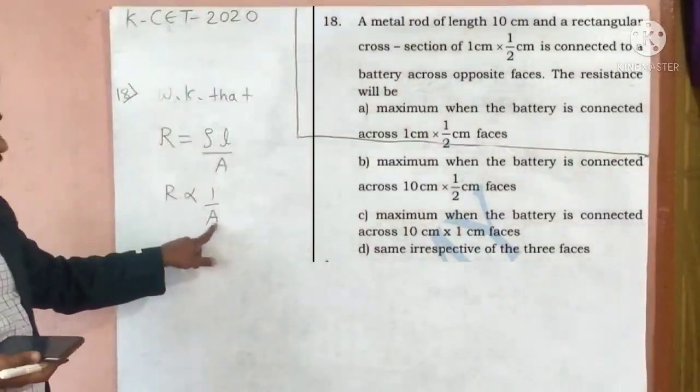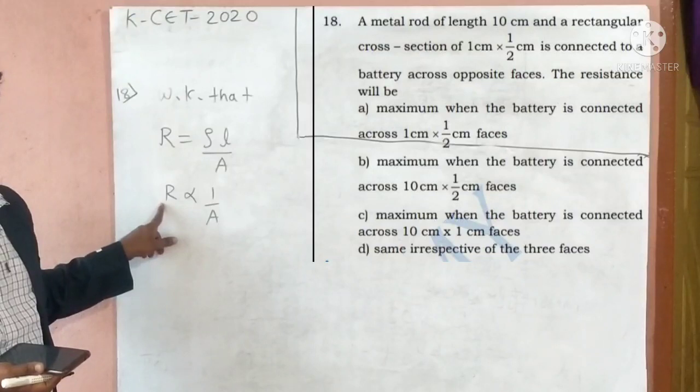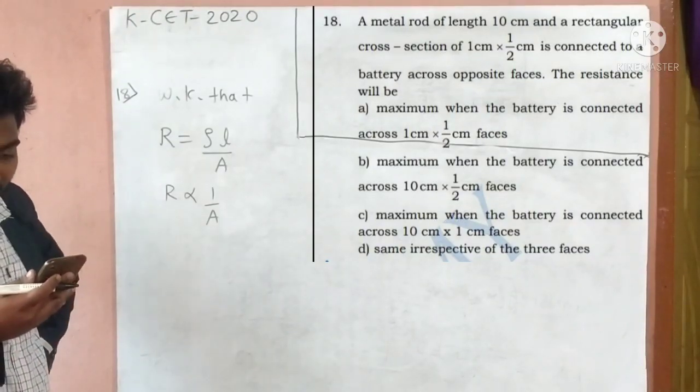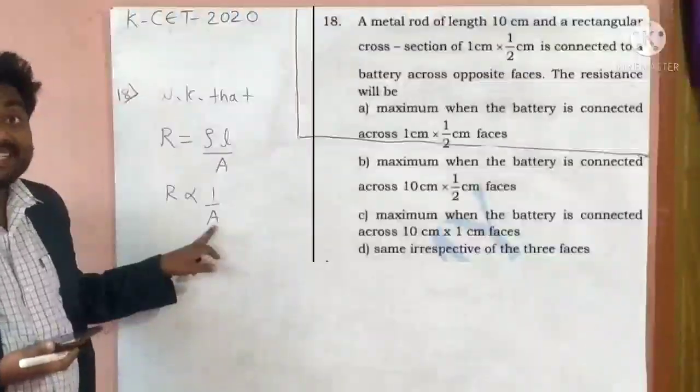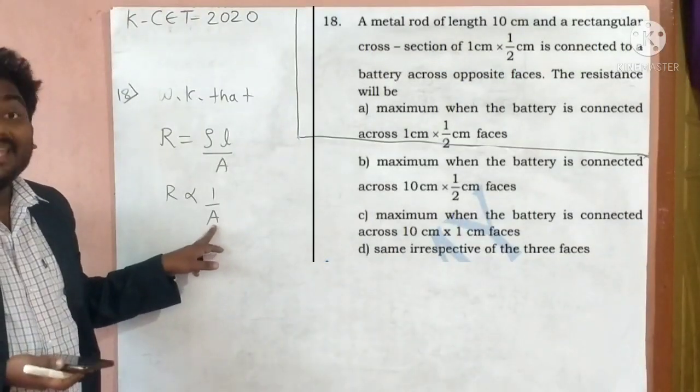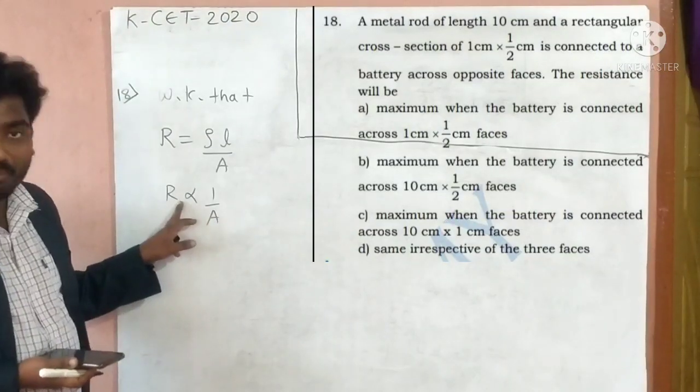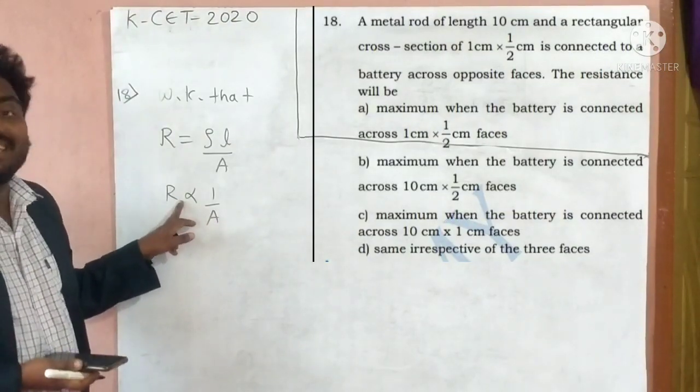If area is more, resistance is less. If area is less, resistance is more. In the first option area is less. If area is less, resistance is more. So option A is the correct answer.